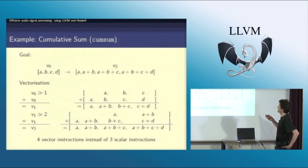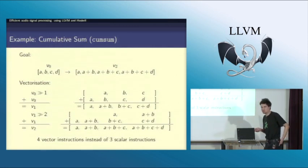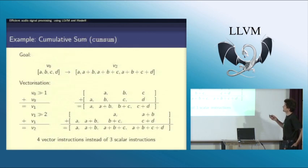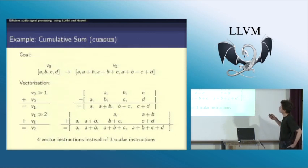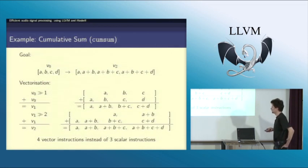then add the second, then add the third one, then add the fourth one. This can be decomposed into some vector instructions. For instance, I take the original vector, move it one element to the right, and then add them together. Then I have the cumulative sum.